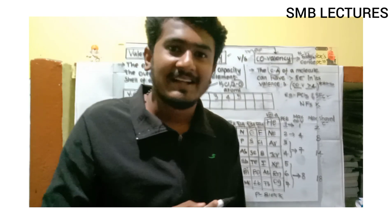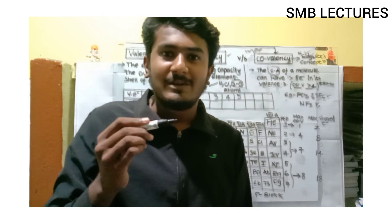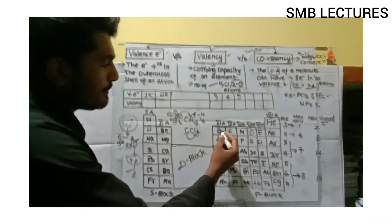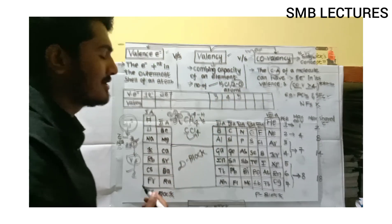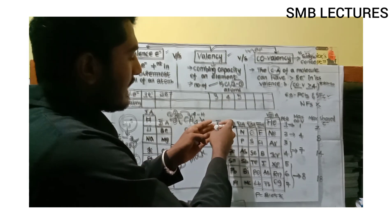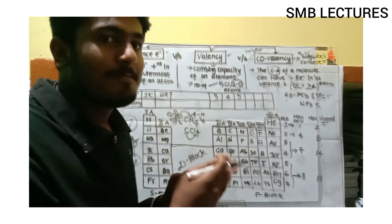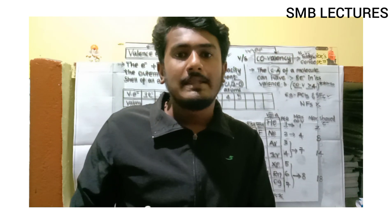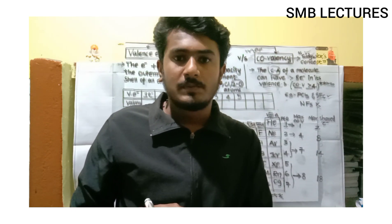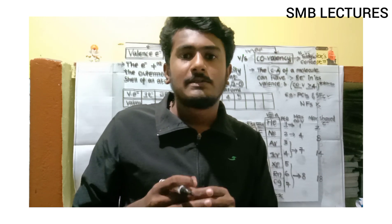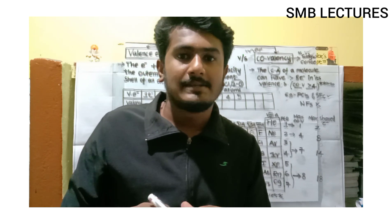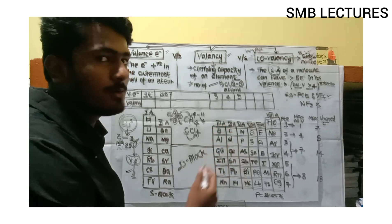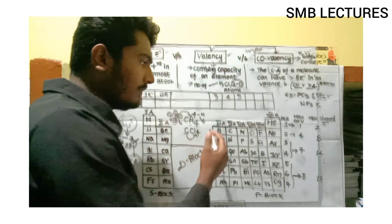The reason the group number equals the number of valence electrons is because it is already proven that way. That is why each and every element in a particular group has the same valence electrons. The valence electrons also play an important role in the chemical properties of groups — since each group has the same number of valence electrons, the chemical properties within each group are also the same.